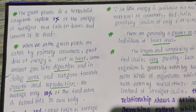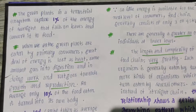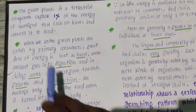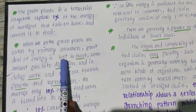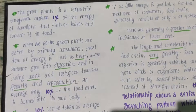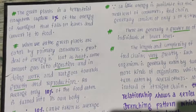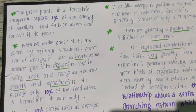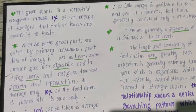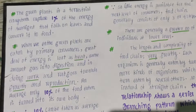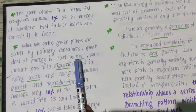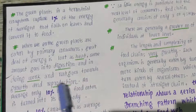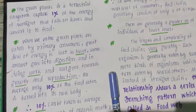Green plants are eaten by primary consumers, which are herbivores. When the green plants are eaten by primary consumers, a great deal of energy is lost as heat, some goes into digestion and doing work, and the rest goes towards growth and reproduction. On average, only ten percent of the food eaten is turned into the organism's own body flesh.